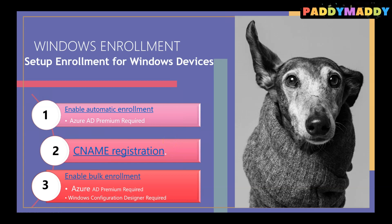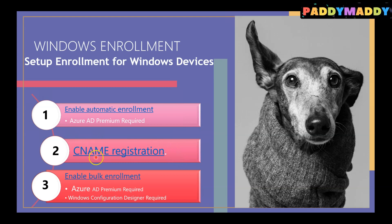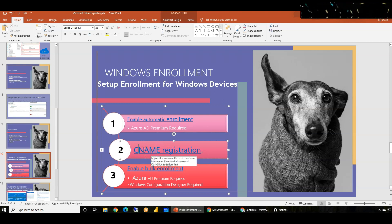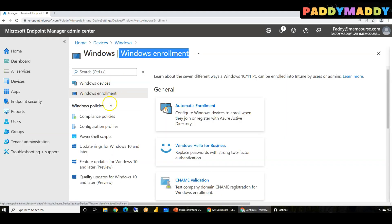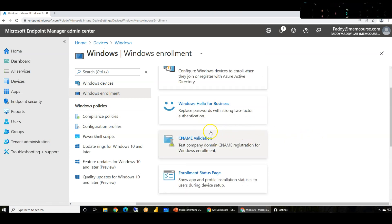To avoid that - because from an end user point of view, we don't tell users to manually enter a specific URL to enroll the device into Intune - what you can do is configure something called a CNAME registration. This is an option for users who do not have Azure AD Premium. CNAME is a canonical name coming from your DNS. You can configure this from Devices > Windows Devices > Windows Enrollment, where you have a CNAME validation option.